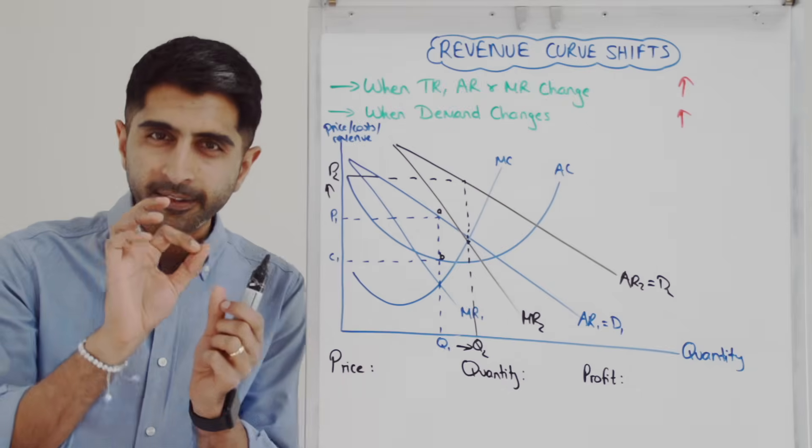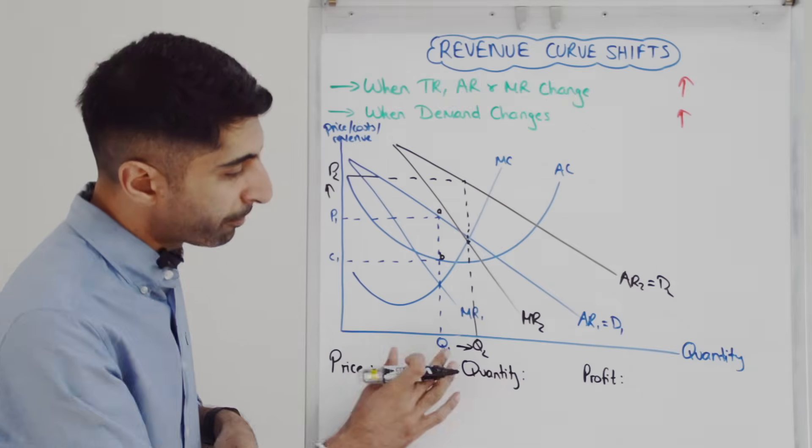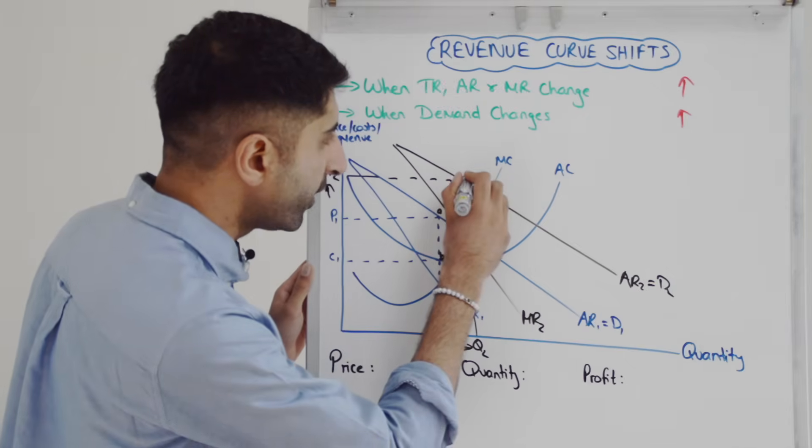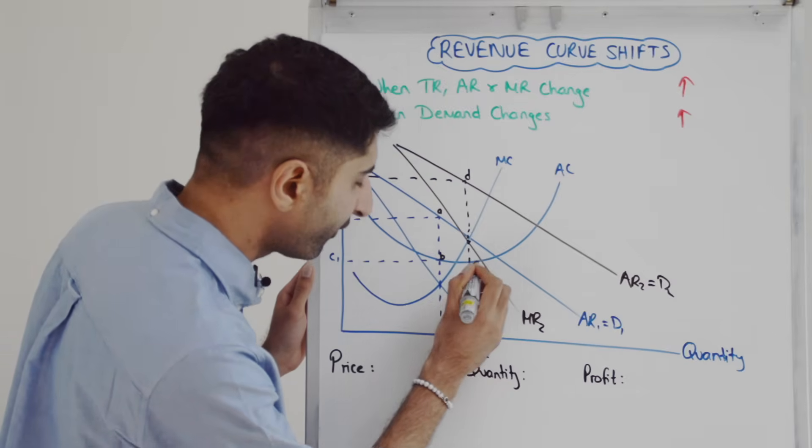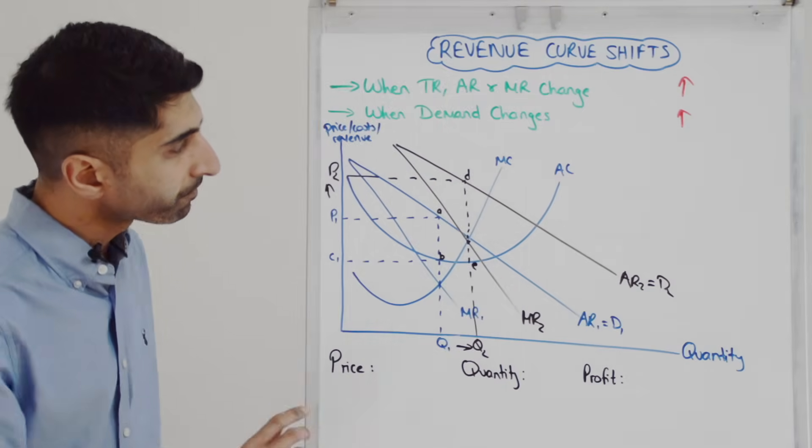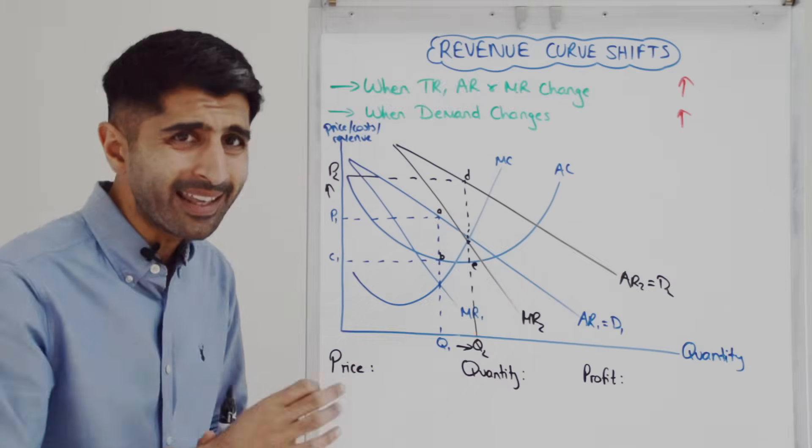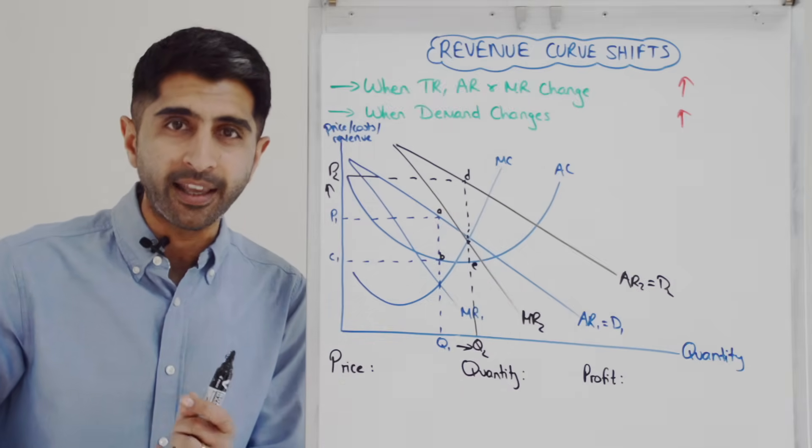Just like when demand shifts right in a normal market, we expect to see that. Let's work out the profit per unit. Let's compare AR and AC at the profit max quantity of Q2. Well, AR is now over here, let's call that point D. And AC, we need to go all the way down here to find AC, which is point E. So D is AR, E is AC.